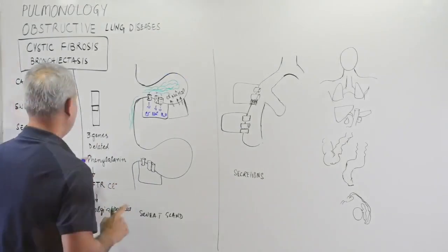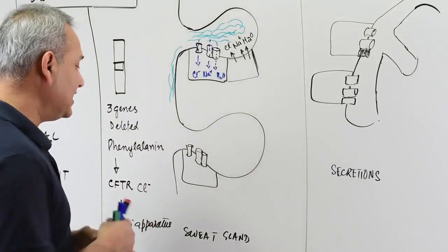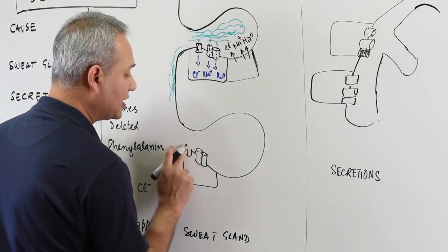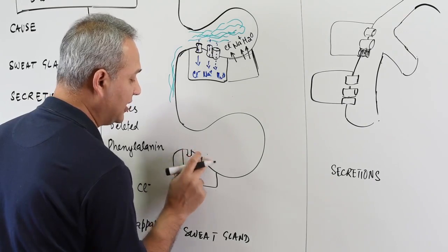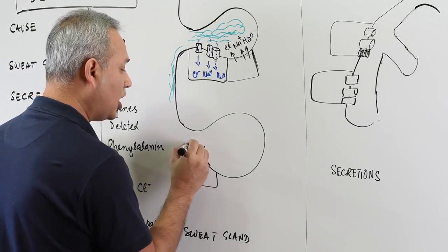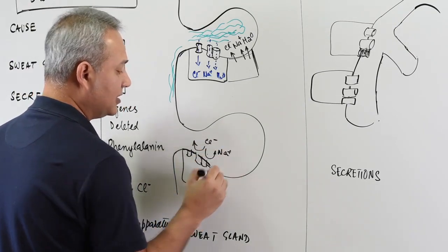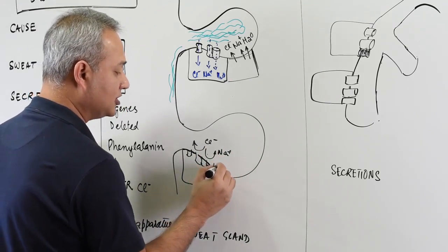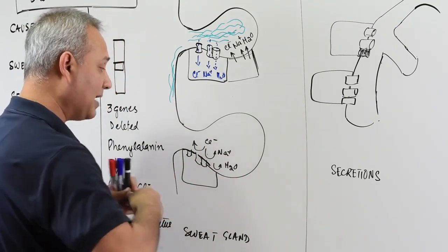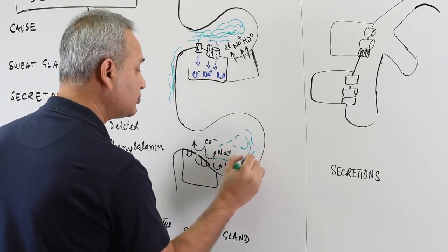However, once the chromosome has a problem and the CFTR abnormality is present, then what happens is that in these patients the sweat glands actually do not have a normally functioning CFTR complex. The result of that is chloride is not reabsorbed, sodium is not reabsorbed. That also means that the water reabsorption is also less.